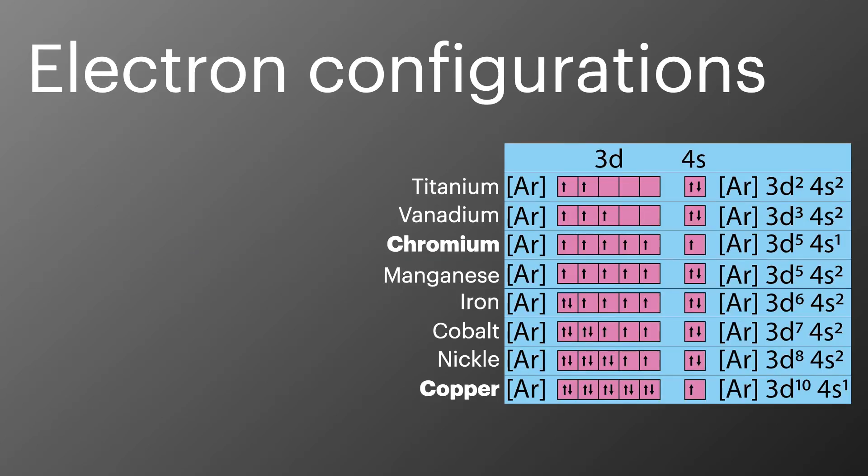The electron configuration across the period 4 transition metals almost fit a pattern. With most elements having a complete 4s subshell and then an incomplete 3d subshell.